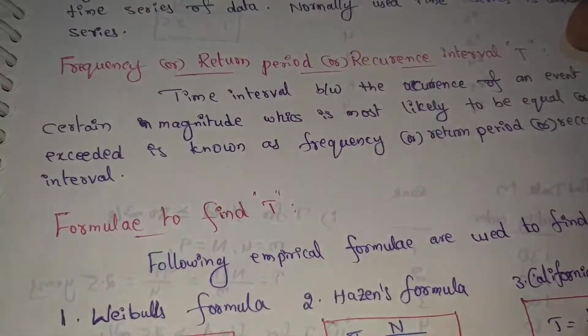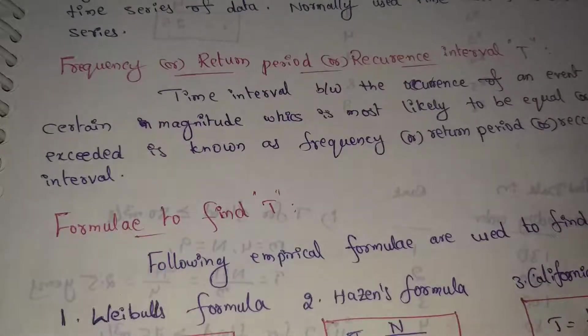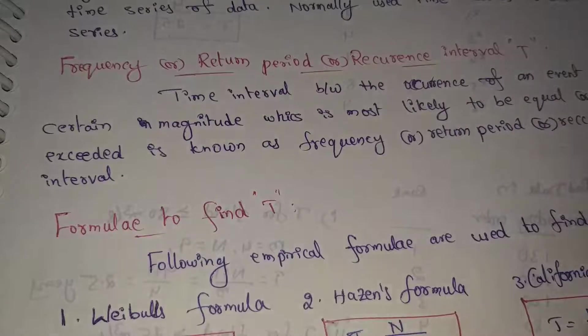This is known as frequency or return period or recurrence interval. Frequency is the average time interval between occurrence of rainfall of magnitude equal or greater than a specified magnitude.